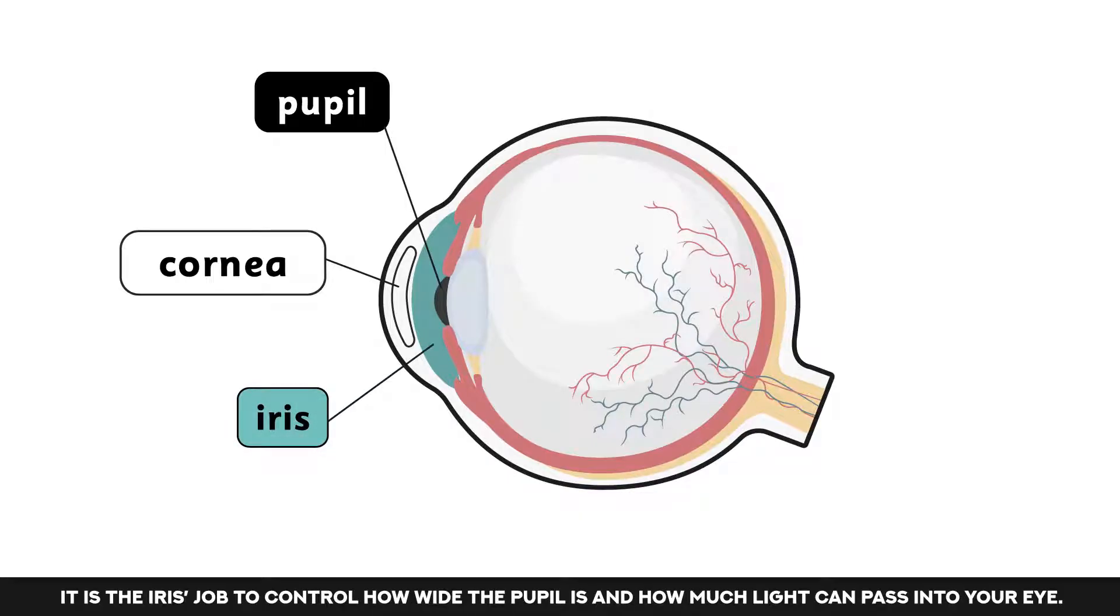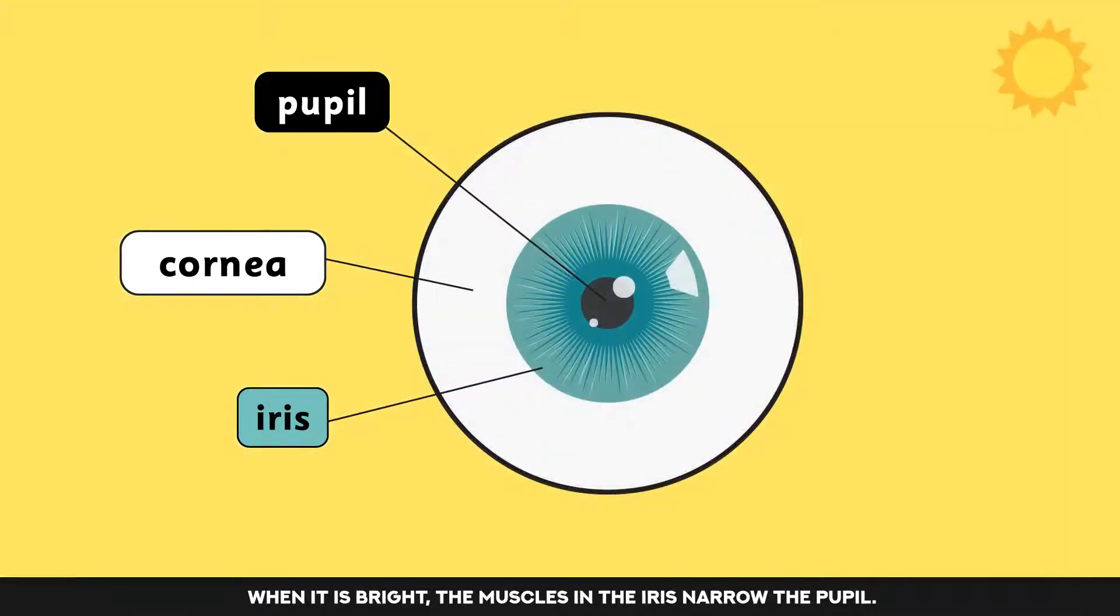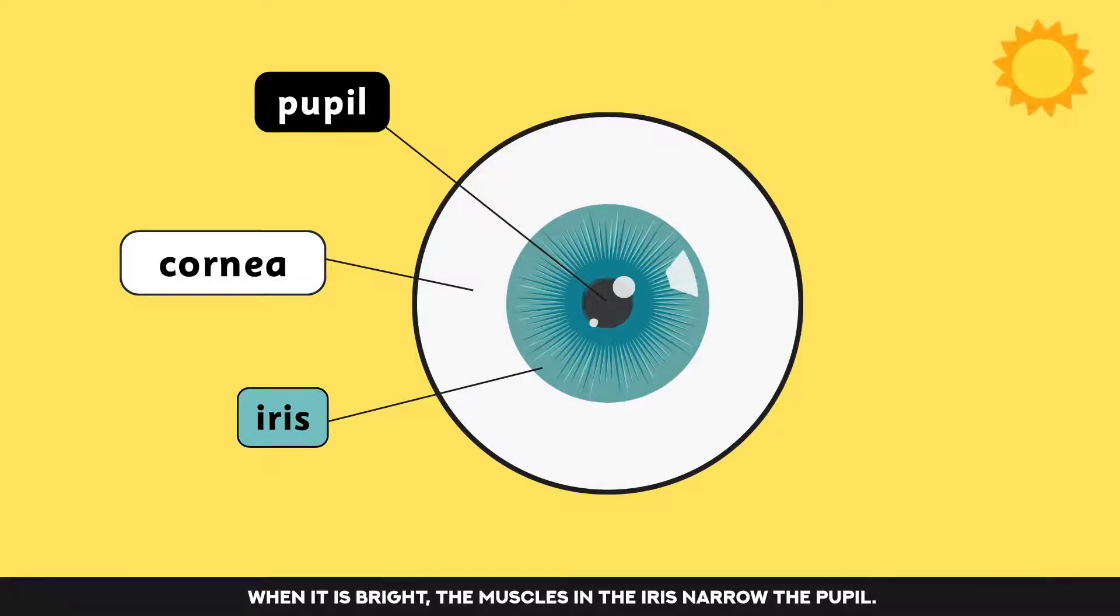It is the iris's job to control how wide the pupil is and how much light can pass into your eye. When it is bright, the muscles in the iris narrow the pupil. This reduces the amount of light that can enter the eye.